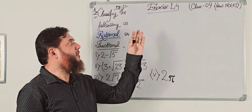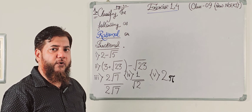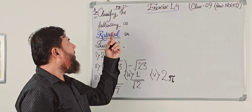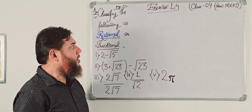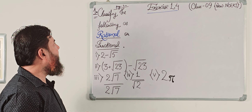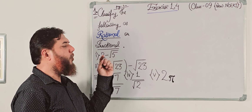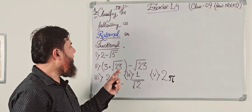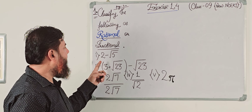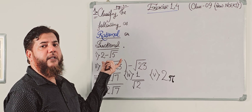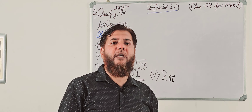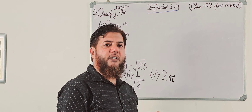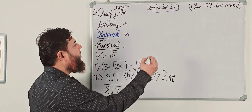Now come back to chapter number 1.4 of the class 9 NCERT Maths, question number 1: classify the following as rational or irrational. We will discuss the first number, 2 minus root 5, and determine whether it is a rational or irrational number.